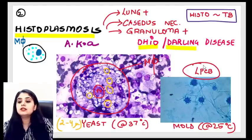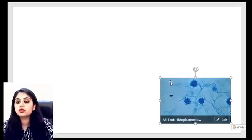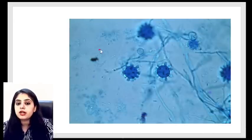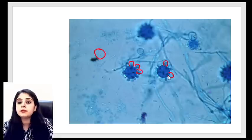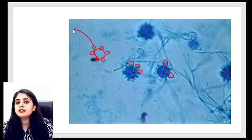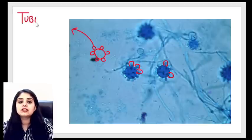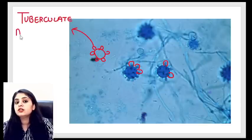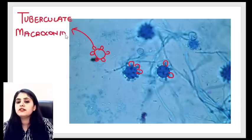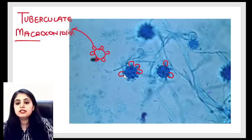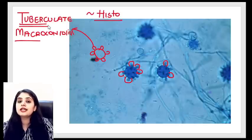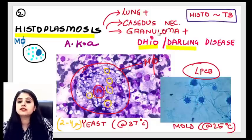Last dimorphic fungus: S for Sporotrichosis, caused by Sporothrix schenckii, also known as rose gardener's disease. History always involves a gardener with a thorn prick from rose bushes. The organism enters via the thorn prick causing cutaneous lesions, which then travel along lymphatic channels — making it a lymphocutaneous disorder.